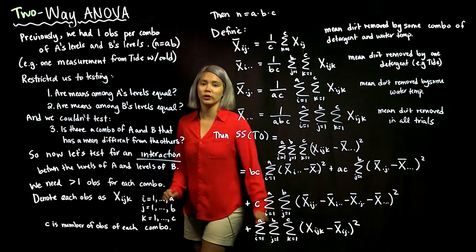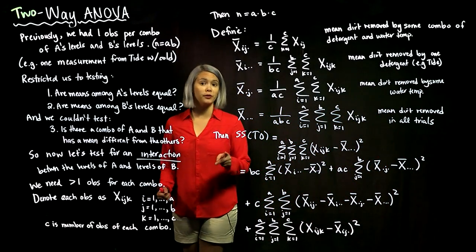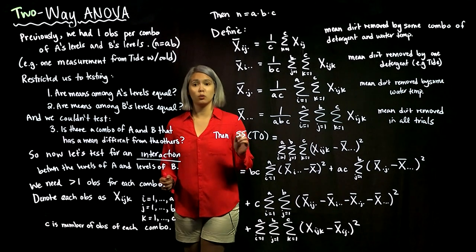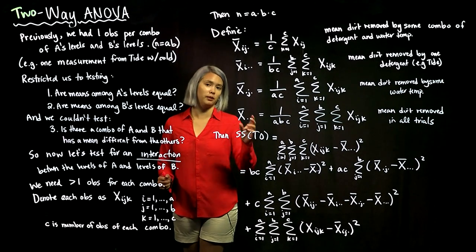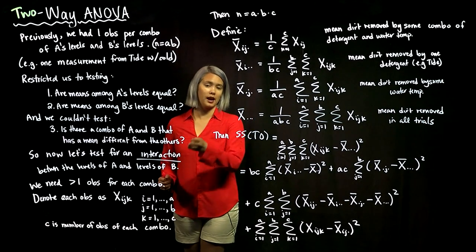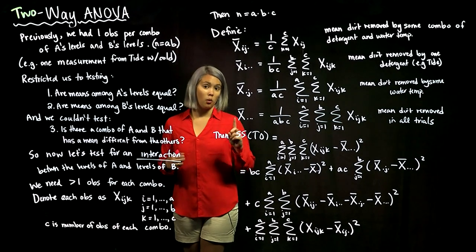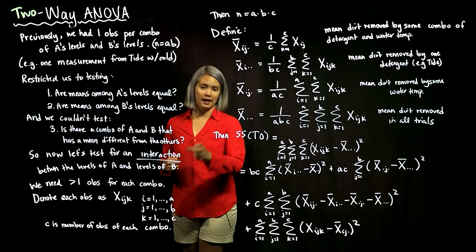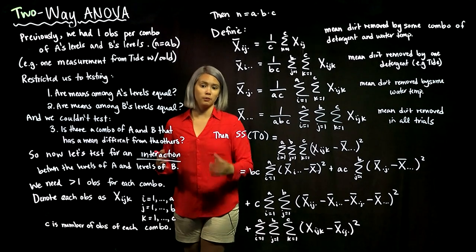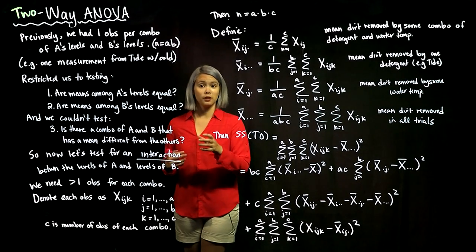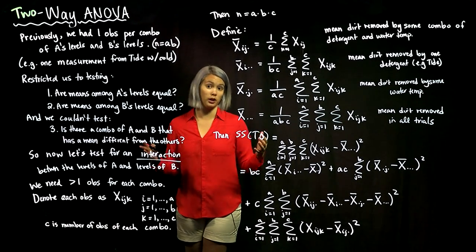In our previous work with two-factor ANOVA, we had two factors, but we only had one observation for each combination of levels in A and levels in B. So in other words, we only had one observation for Tide with cold water. But now we want to move from just having one observation for each combo to having more than one observation.